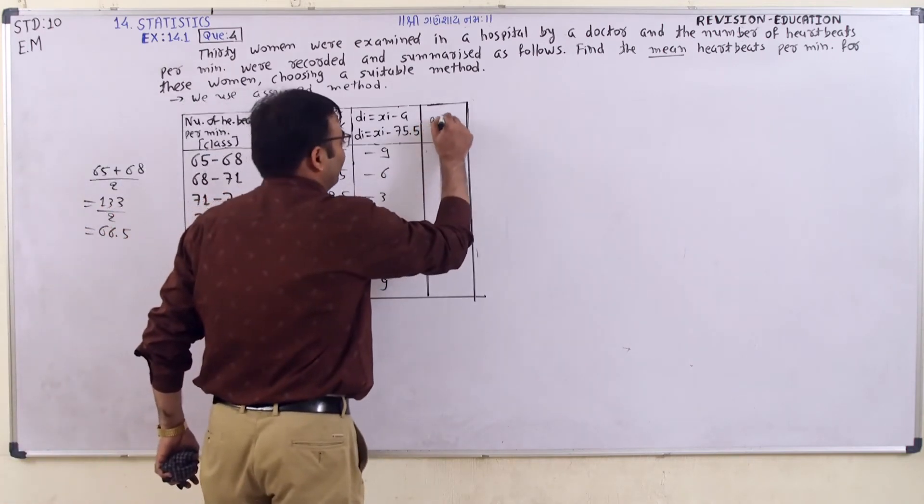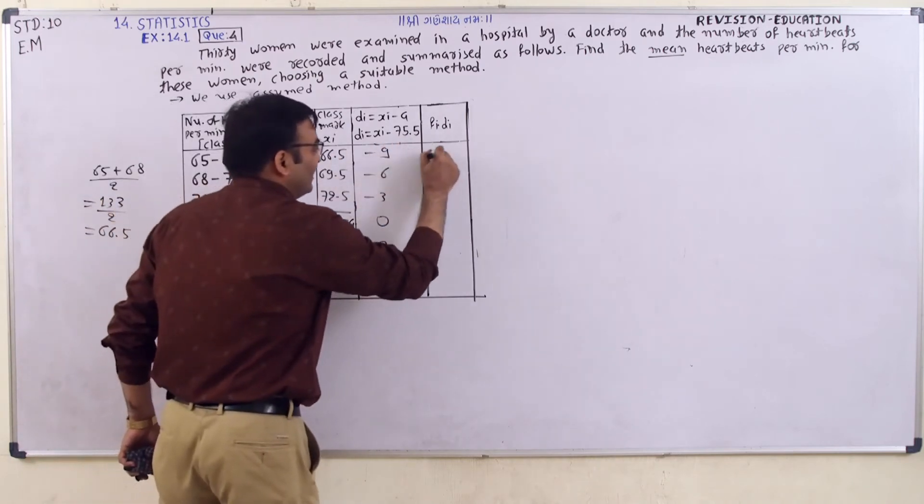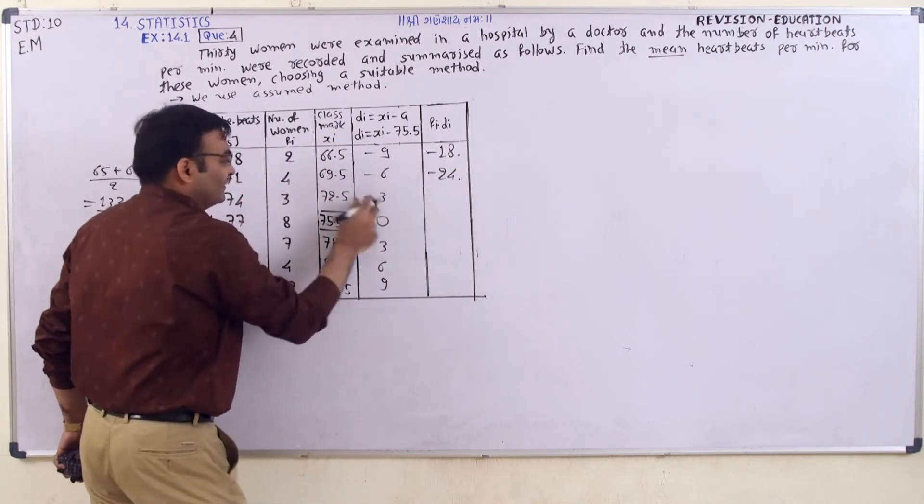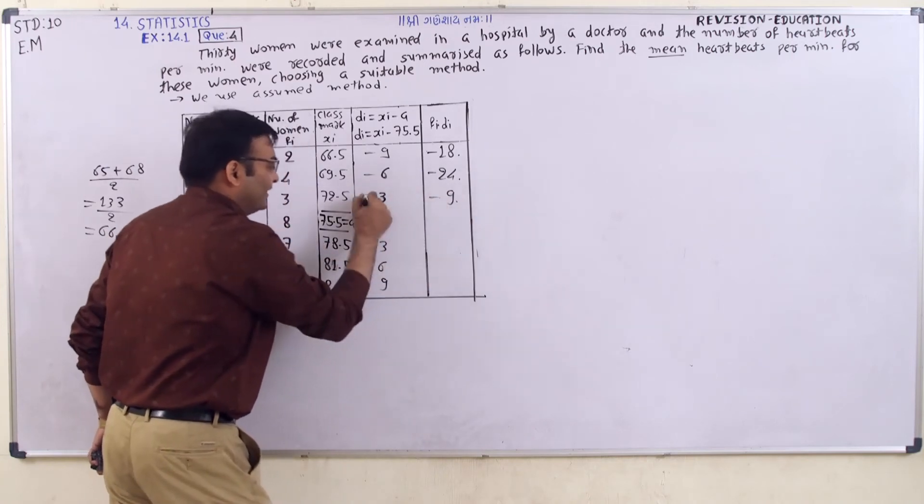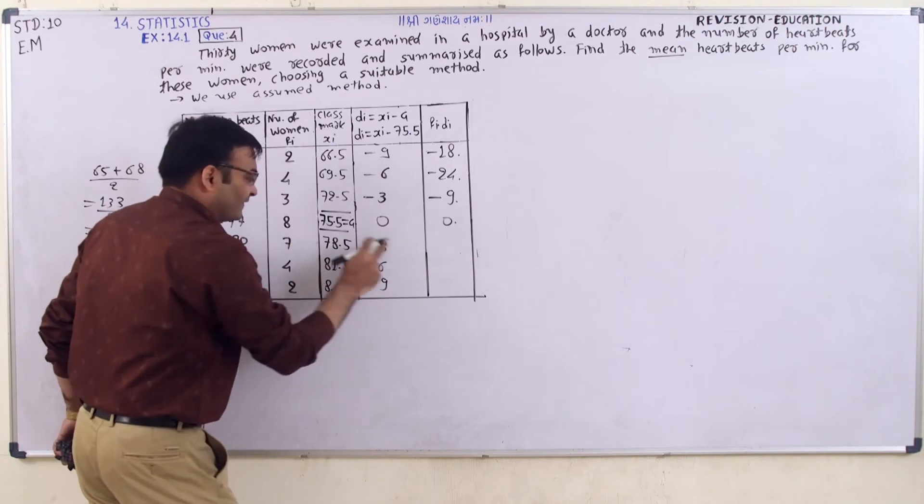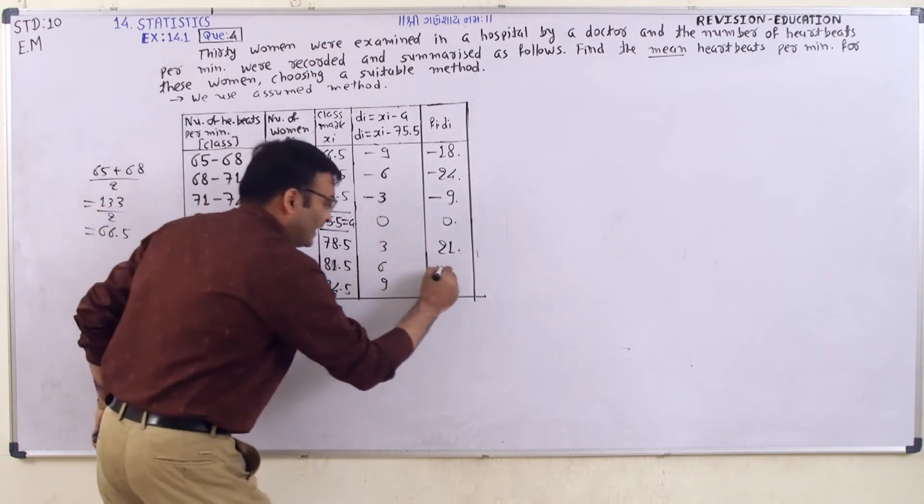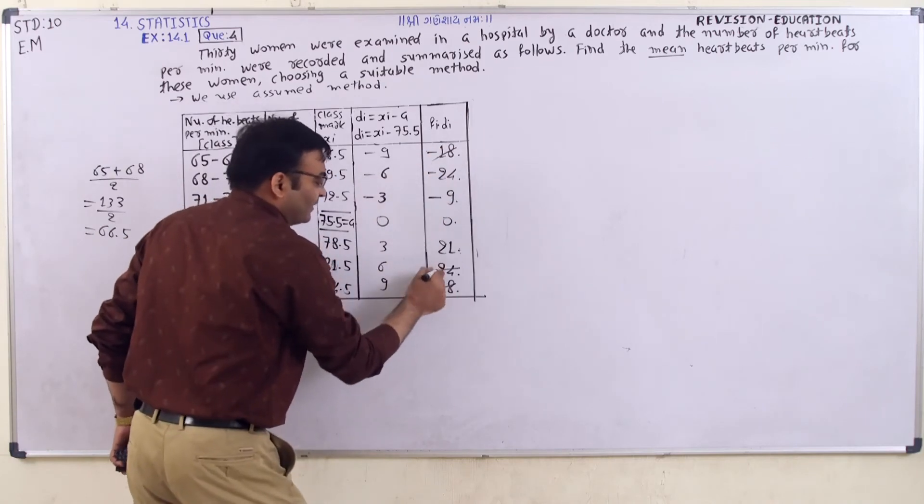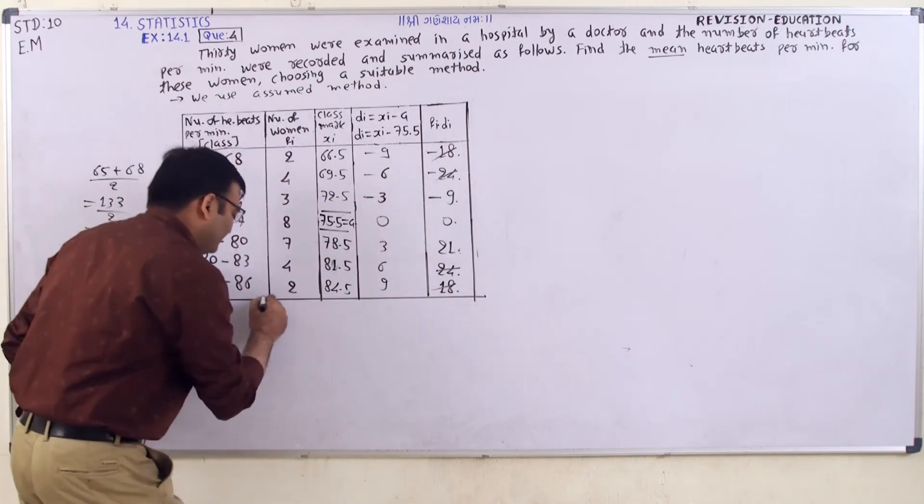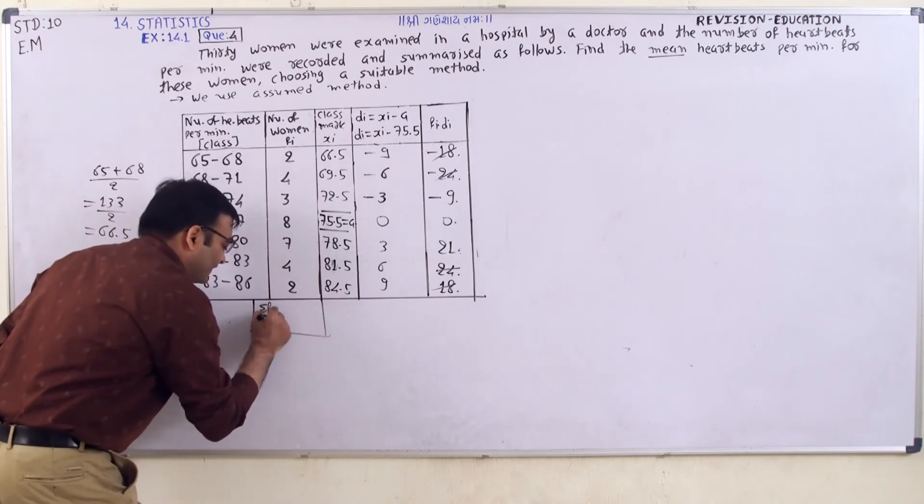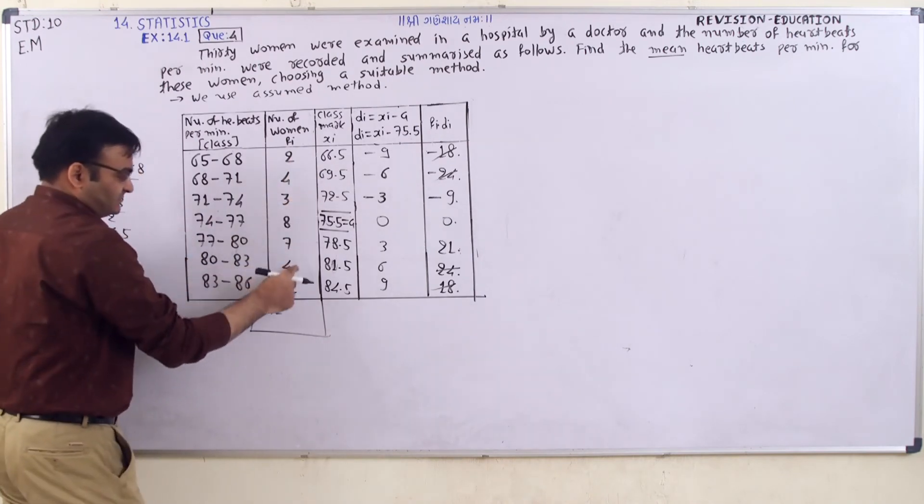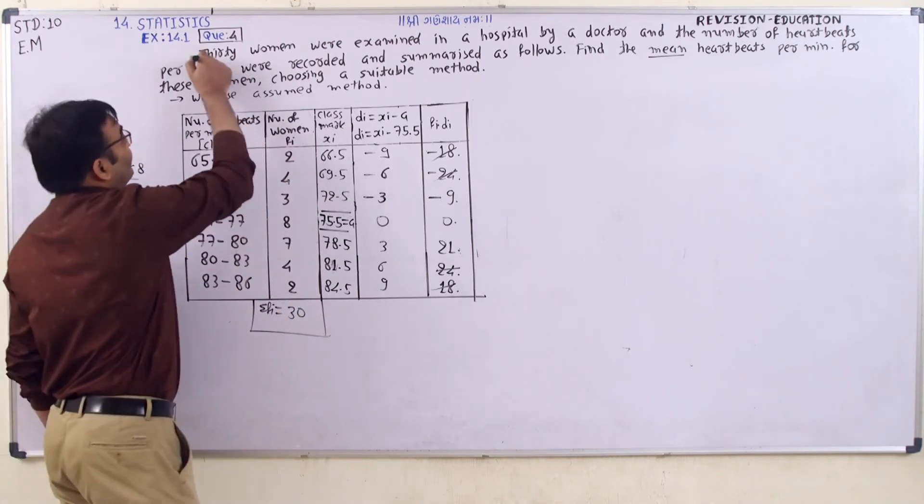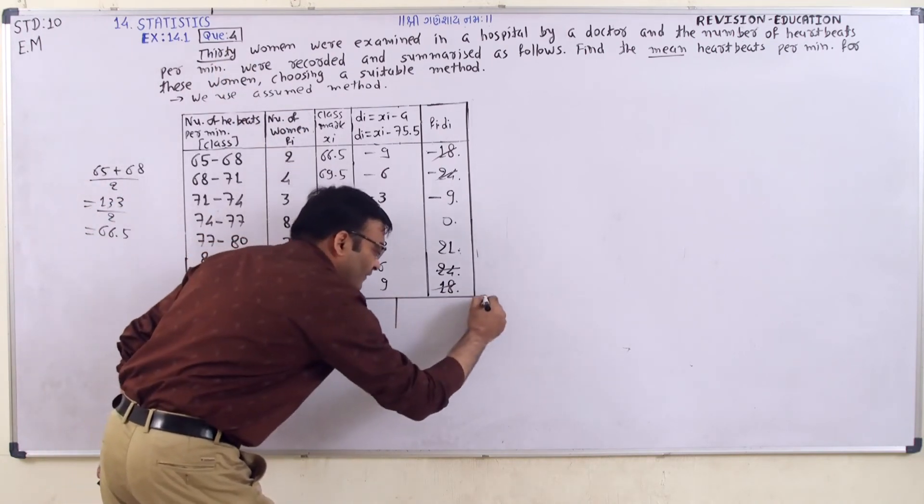Now we do multiplication of fidi. 2 into negative 9 is negative 18. 3 into negative 6 is negative 18. 4 into negative 3 is negative 12. 3 into 0 is 0. 7 into 3 is 21. 4 into 6 is 24. 2 into 9 is 18. Now here we can see negative 18 plus negative 18 is negative 36, plus negative 12 is negative 48. The sum of these, Sigma fidi, is 30. Here is given 30, that is 30.